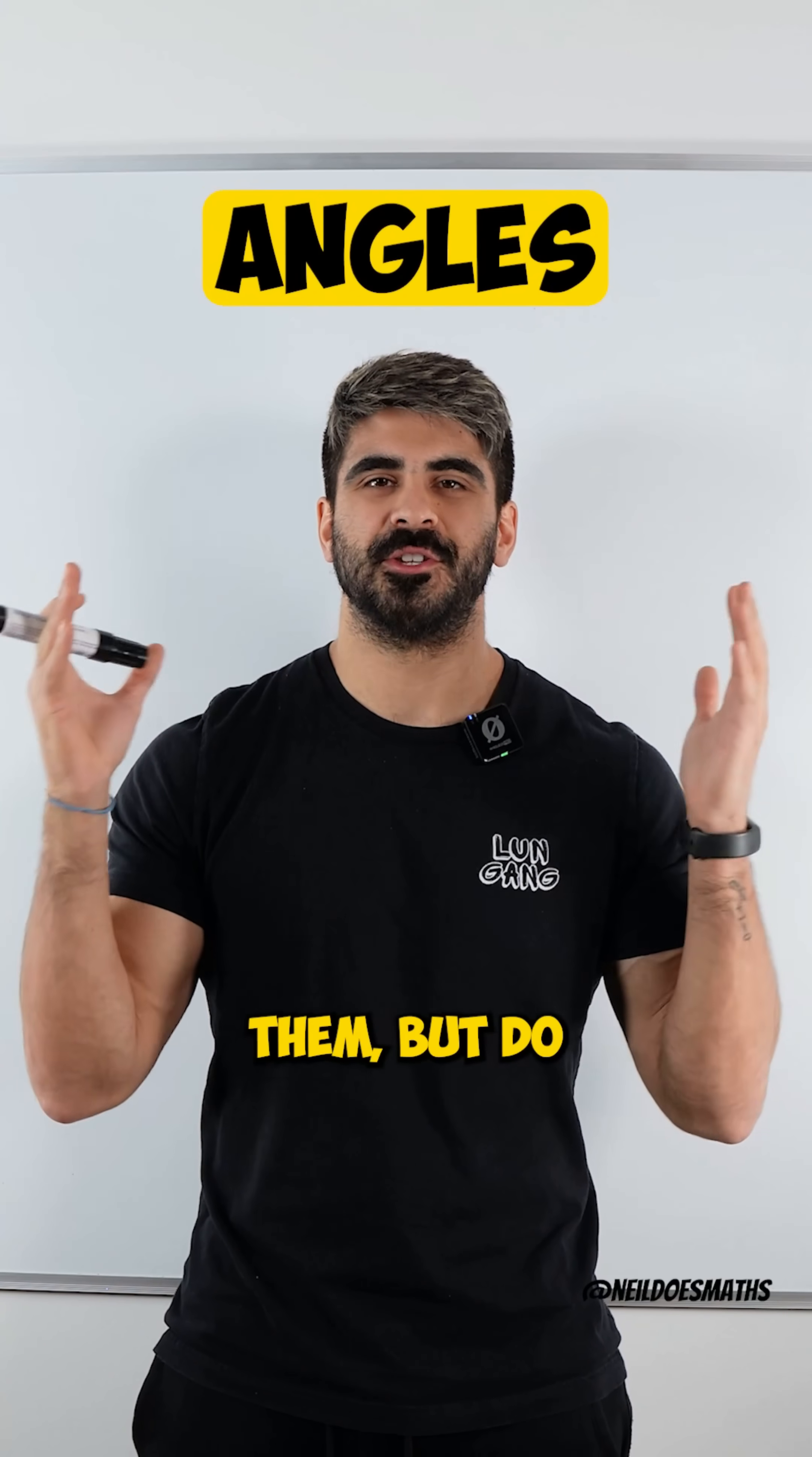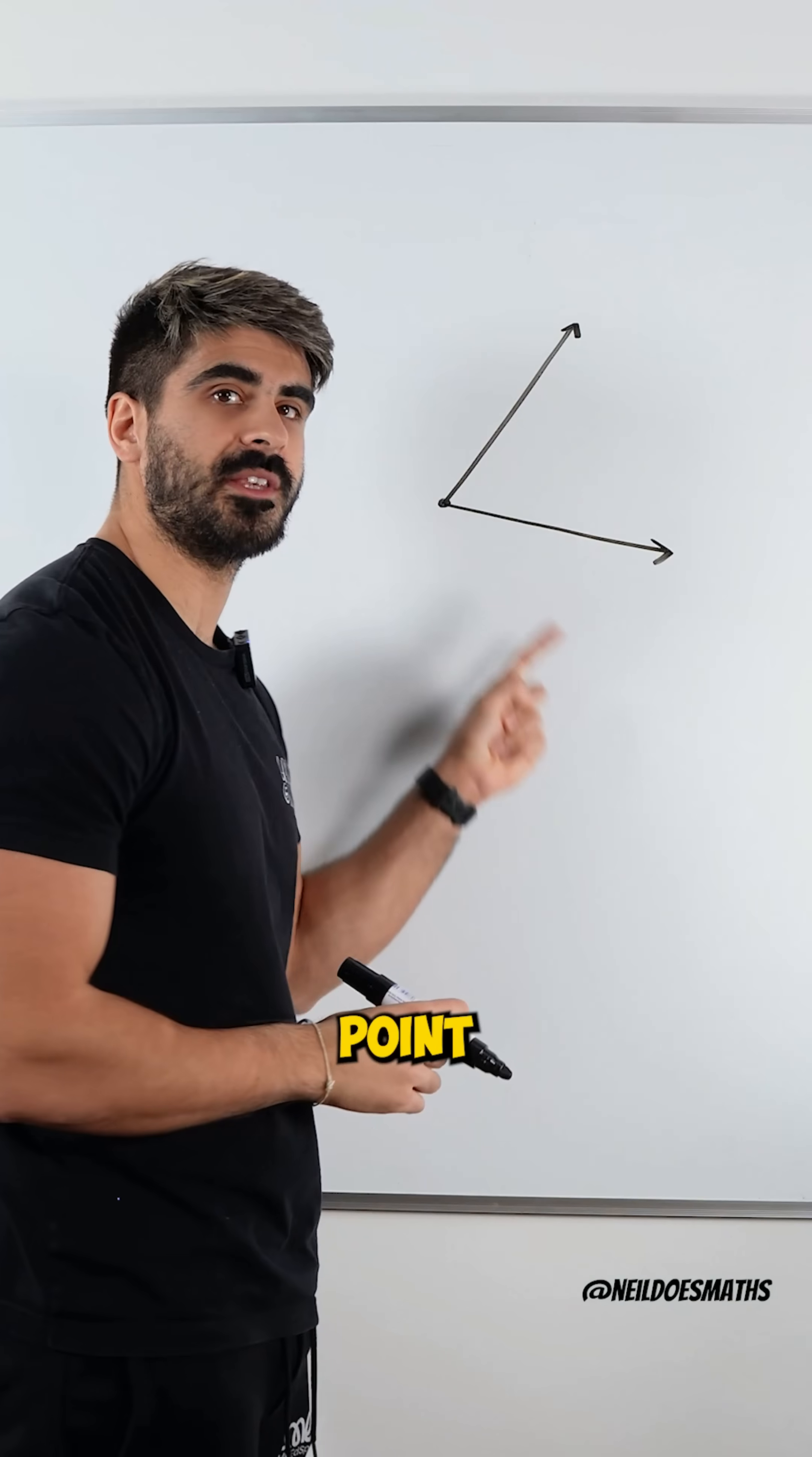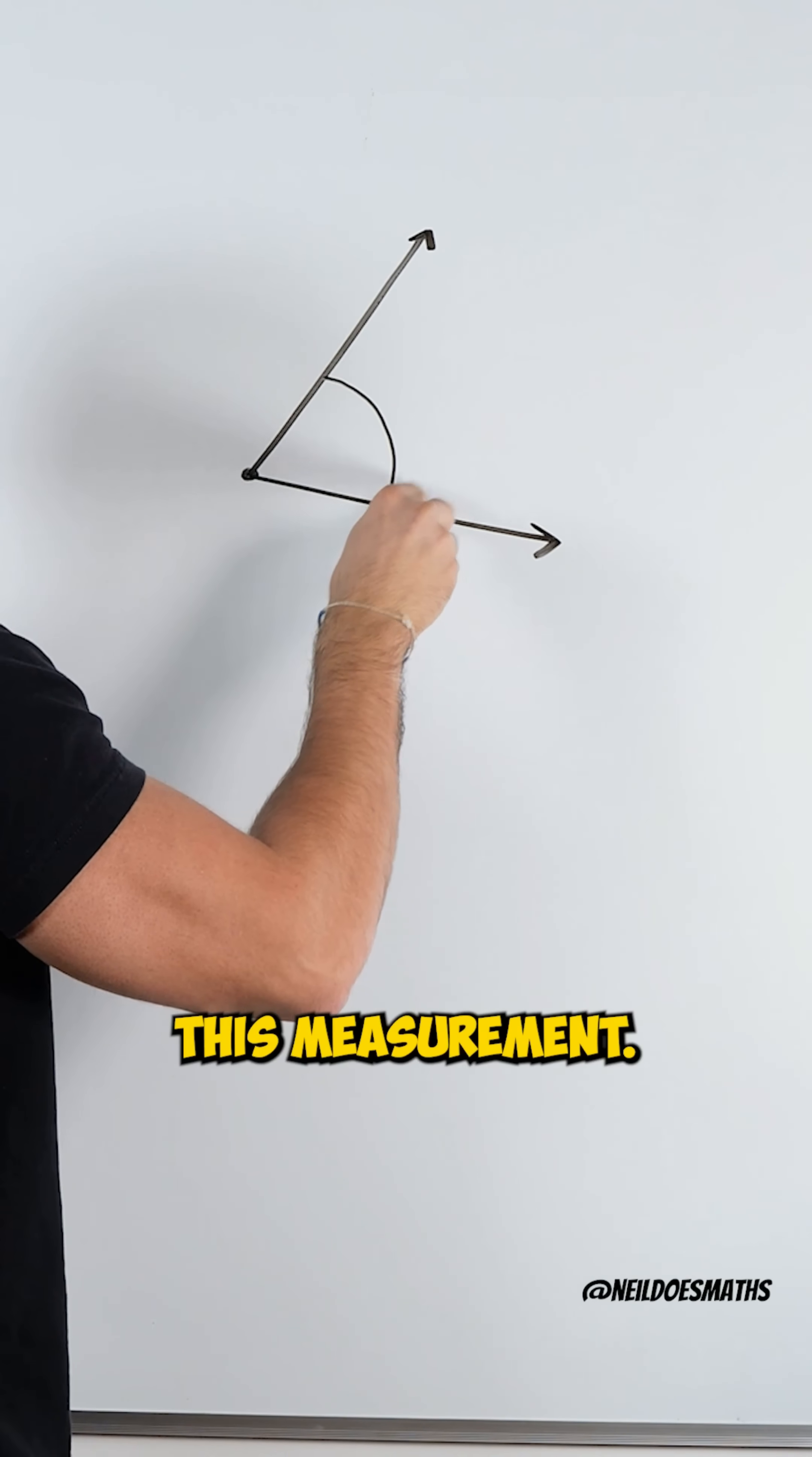Angles. We all use them, but do we actually know what they are measuring? Let me explain. Now if I take two lines subtended from the same point, all an angle measures is how much do I need to rotate one line before it meets the other. It would be this measurement.